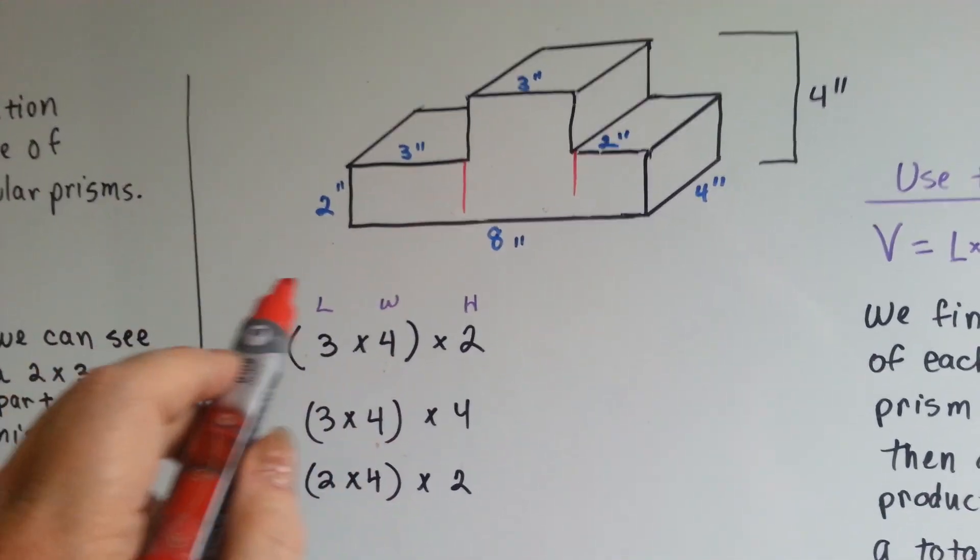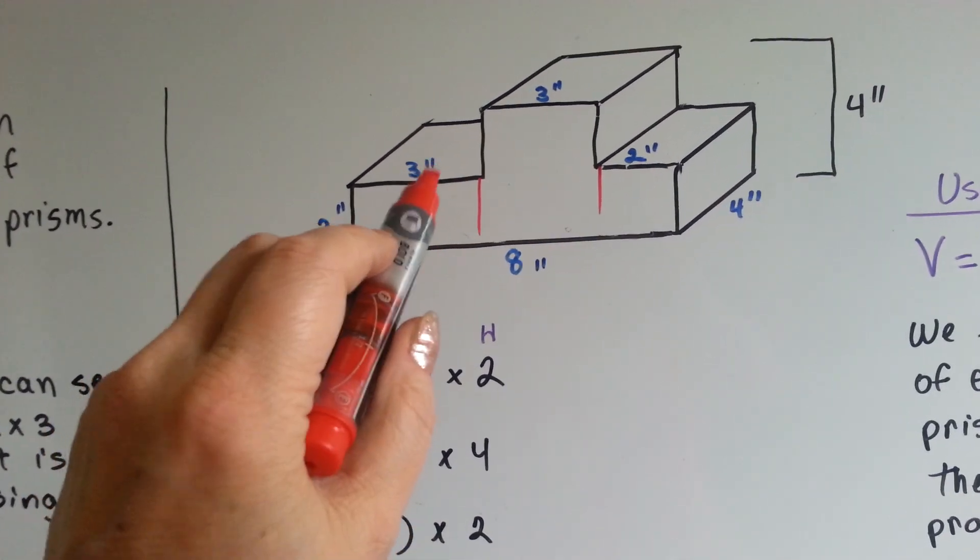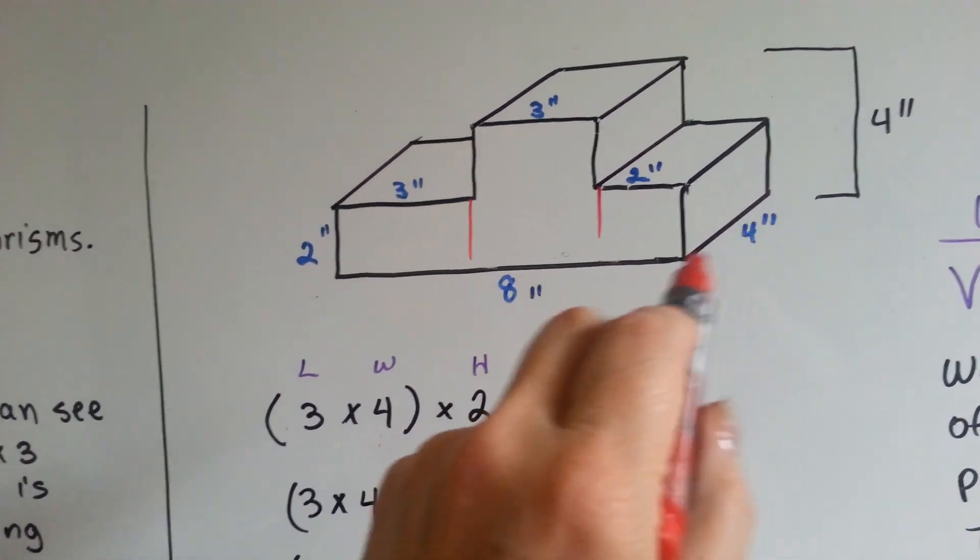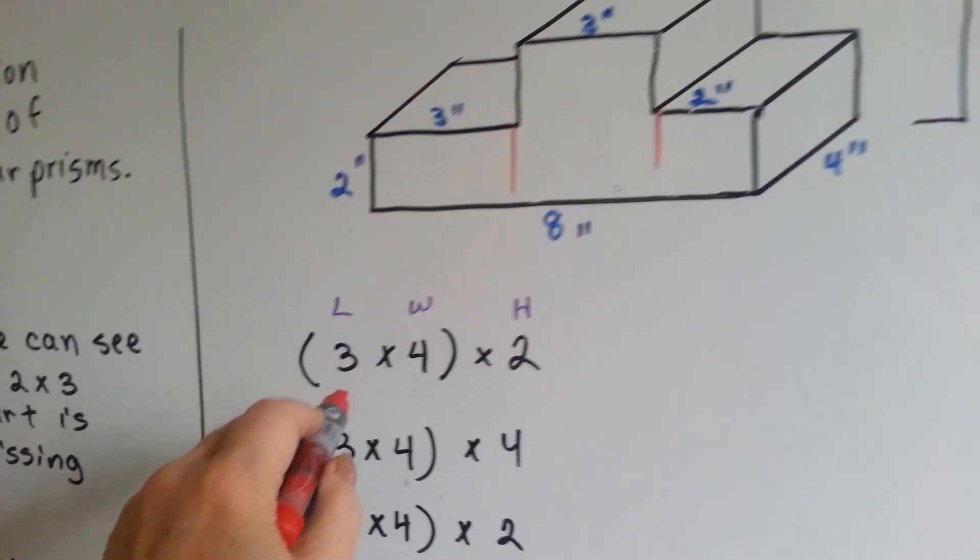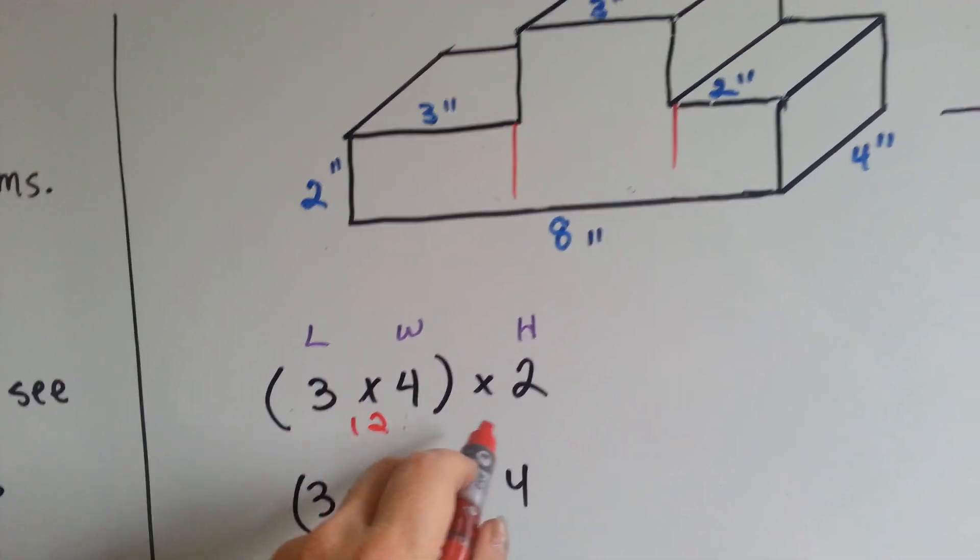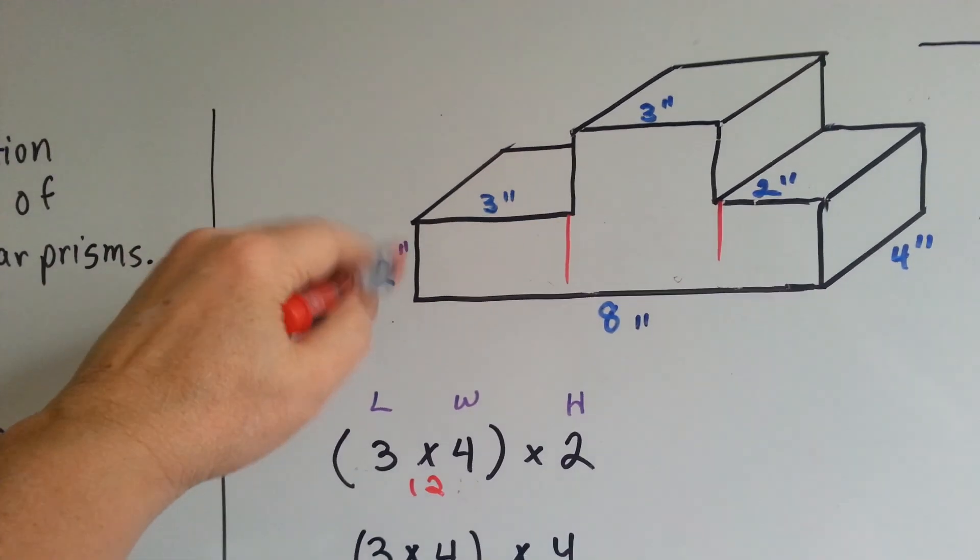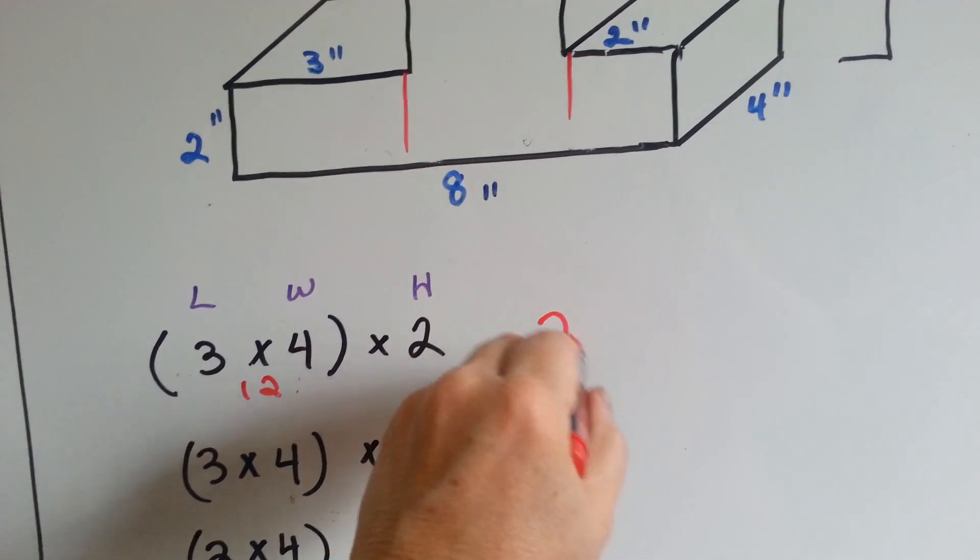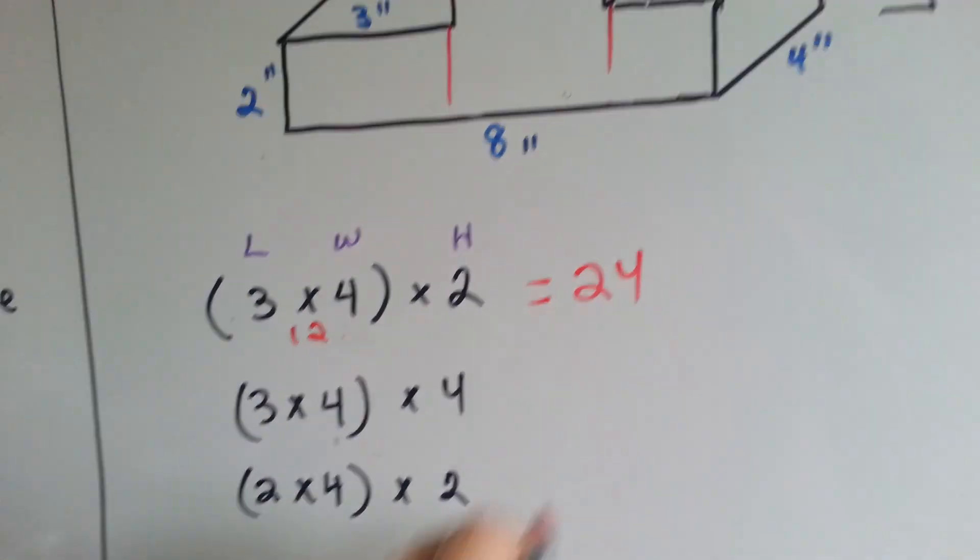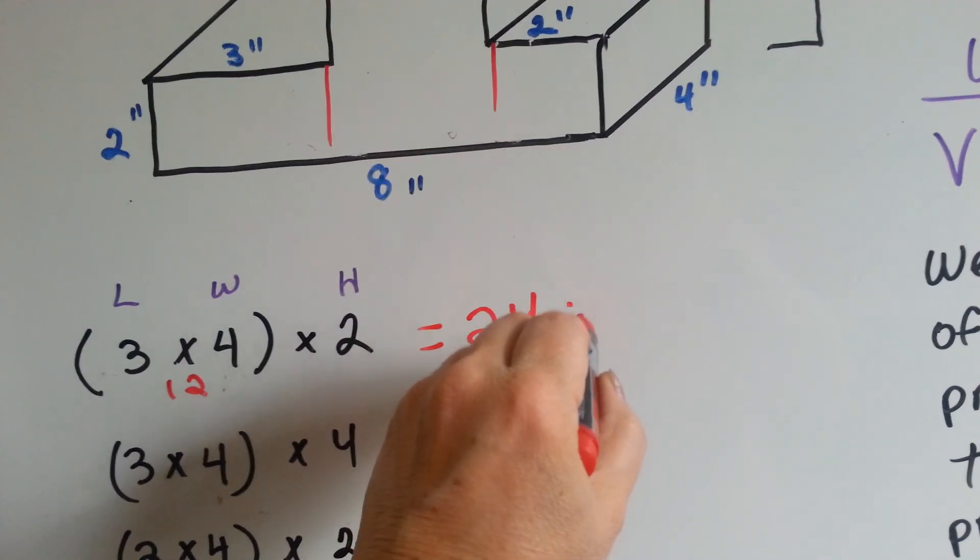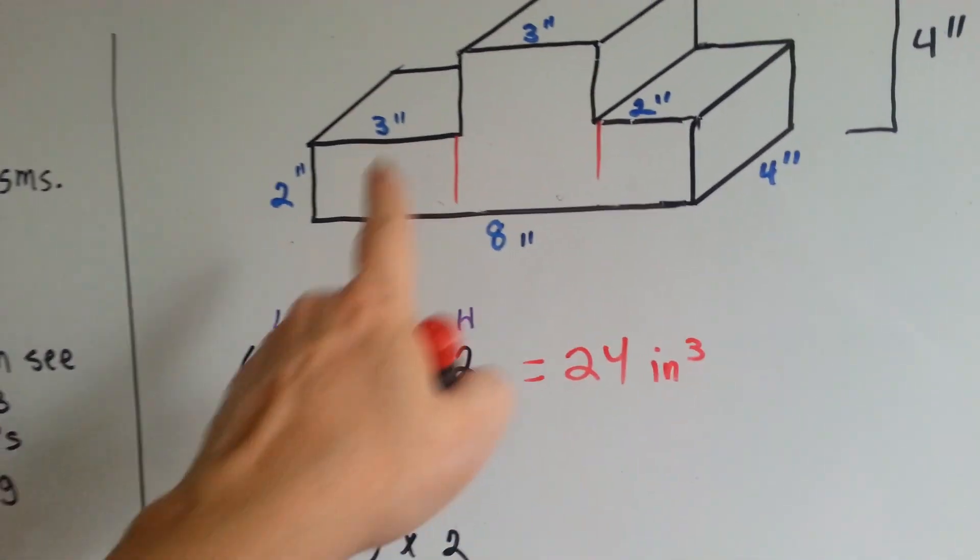So the first one is 3 times 4. This is 3 times 4, which is 12. And the height is 2. 12 times 2 is 24. And that's inches cubed, alright?